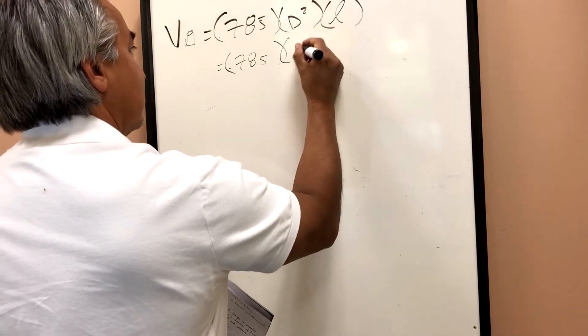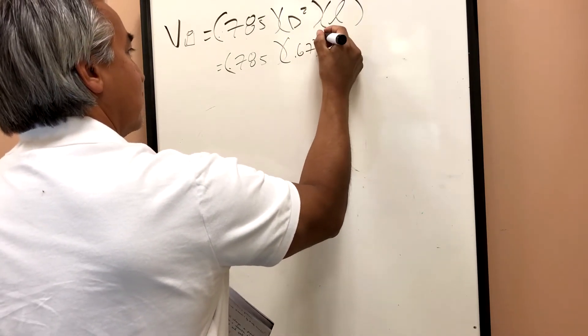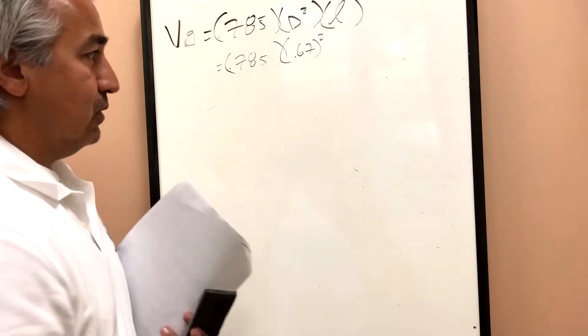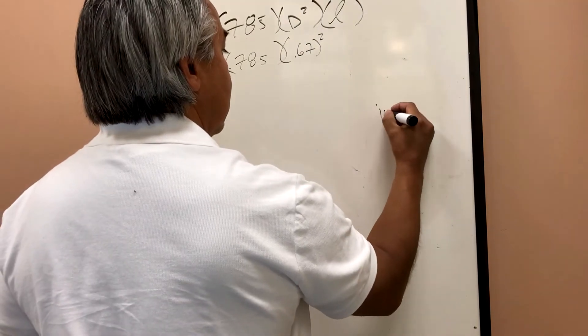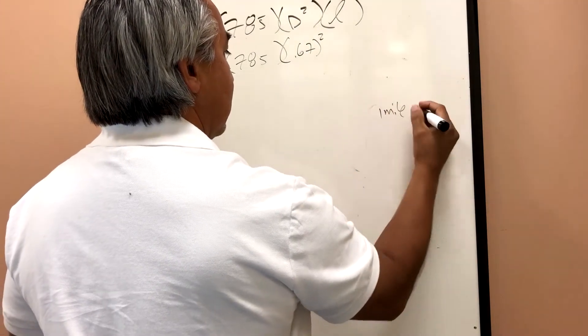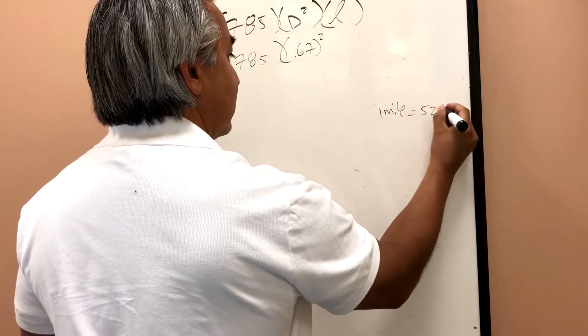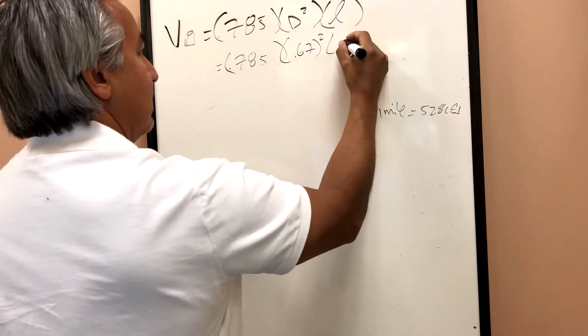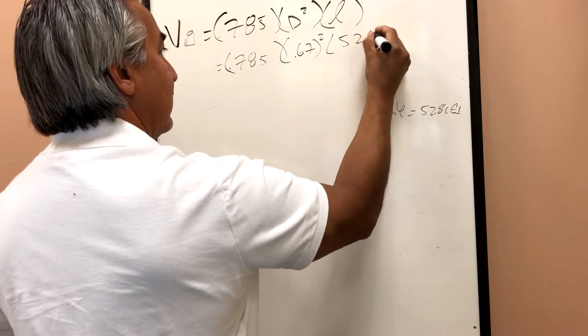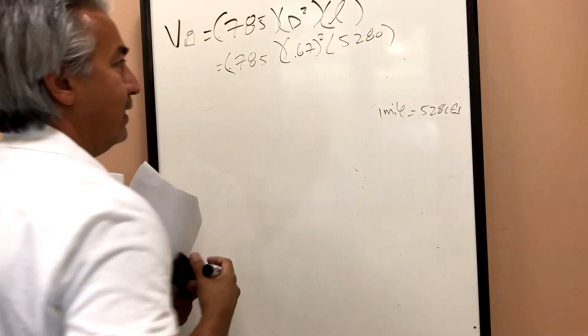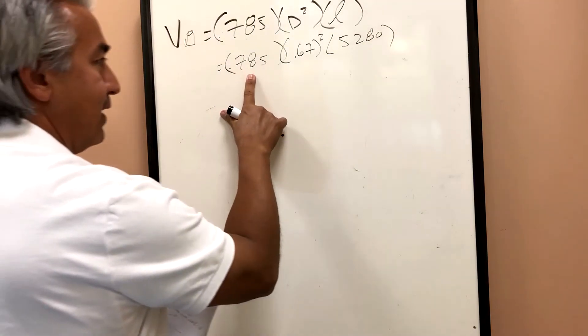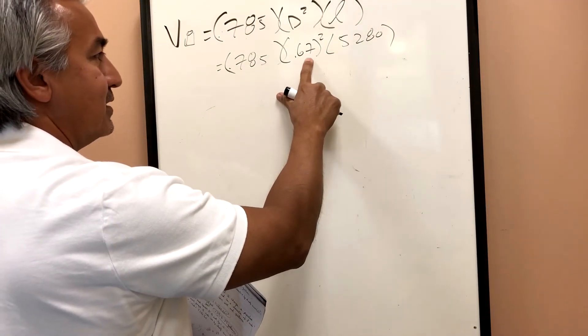And then I can plug that into my diameter. 0.67 is my diameter squared. And it says that the pipeline is one mile long. So one mile is equal to 5,280 feet. So I'm just going to plug that right in here times 5,280.